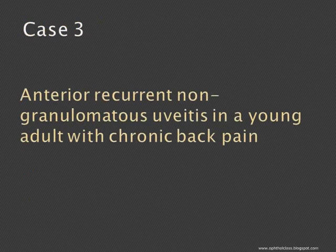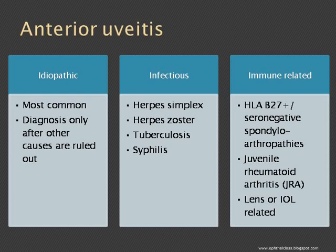Let's take another case of anterior uveitis in a young man with chronic back pain. The causes of anterior uveitis include idiopathic, infectious, and immune-related. Given the chronic back pain, it points more toward HLA-B27 positive or seronegative spondyloarthritis.